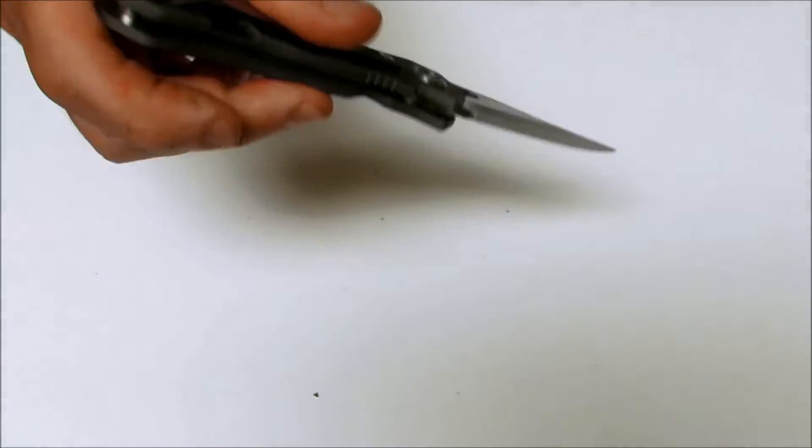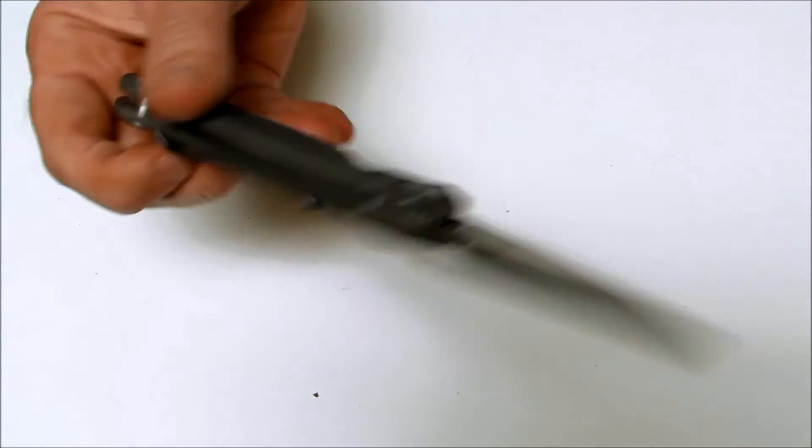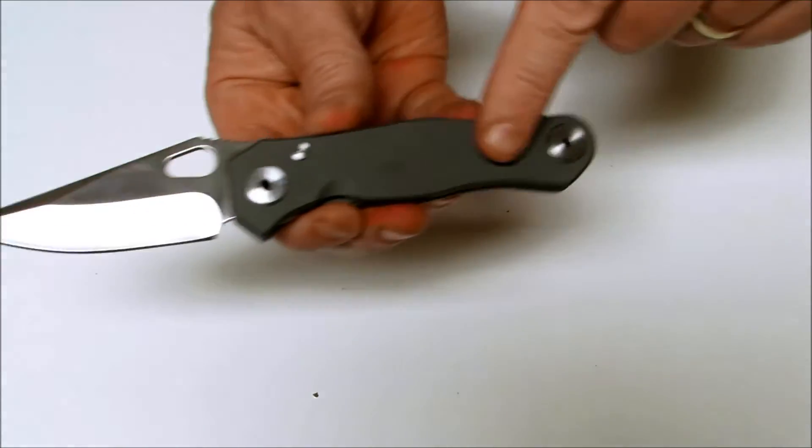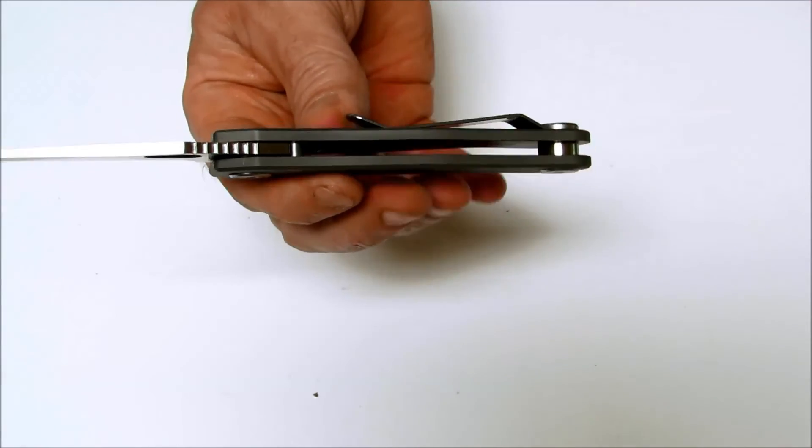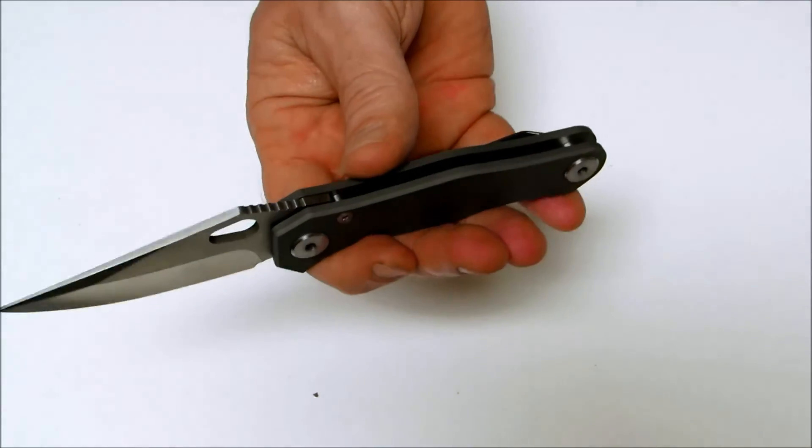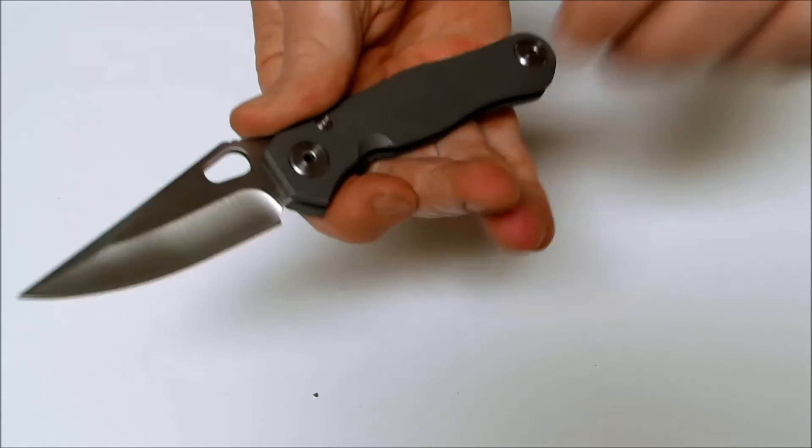High satin finish, plain edge. Handle length, 4.25 inches. The handle thickness, 0.45 inches. So it's going to fit in your pocket really nice and be a great EDC choice.